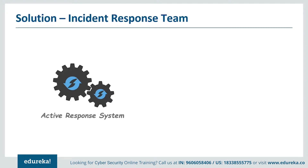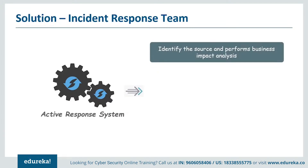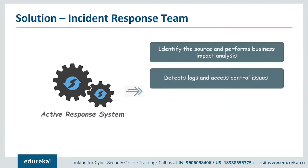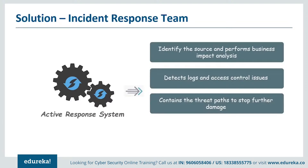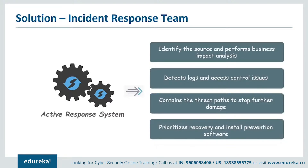Wendy decides not to pay the hackers and instead hires an incident response team from a popular security company. The IRP team's mission is to prevent serious loss of profits and public confidence, and protect information assets. As a first step, the IRP team identifies the source of the security breach. They then detect logs and access controls, and contain the threat so that Wendy's company can avoid further damage. After the attack is contained, the team identifies the data that was stolen or compromised, then prioritizes recovery to protect Wendy's business from further attacks.